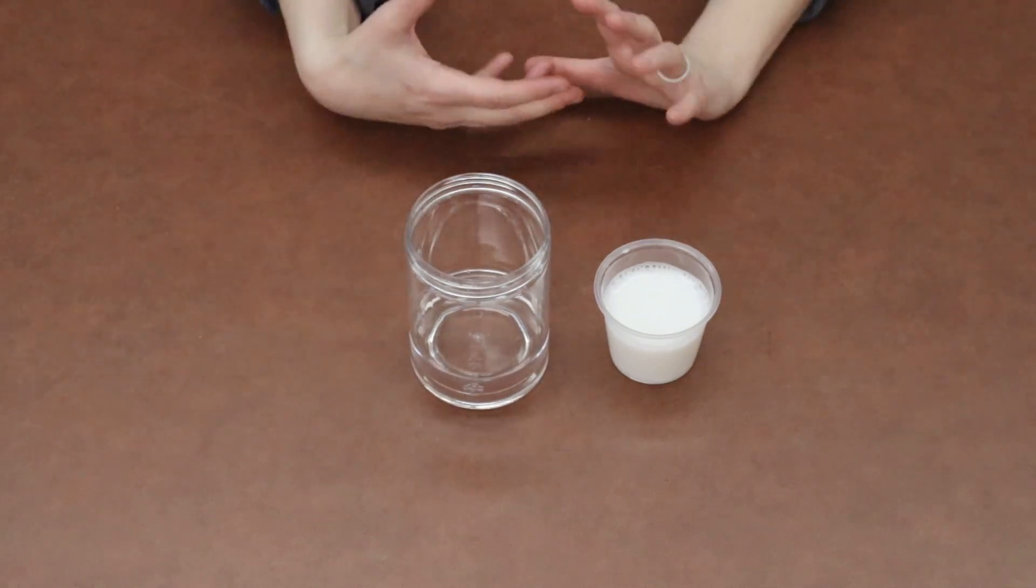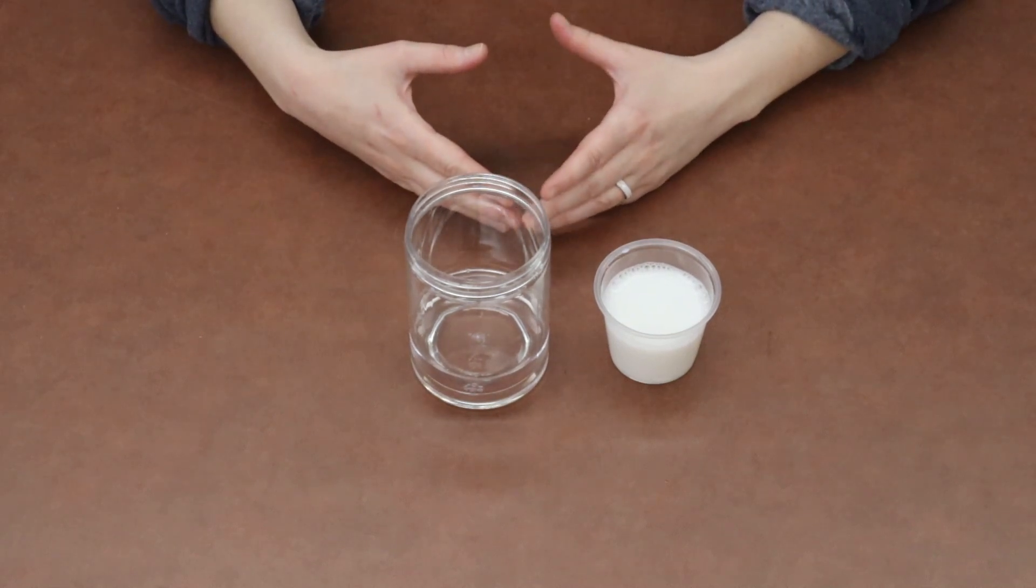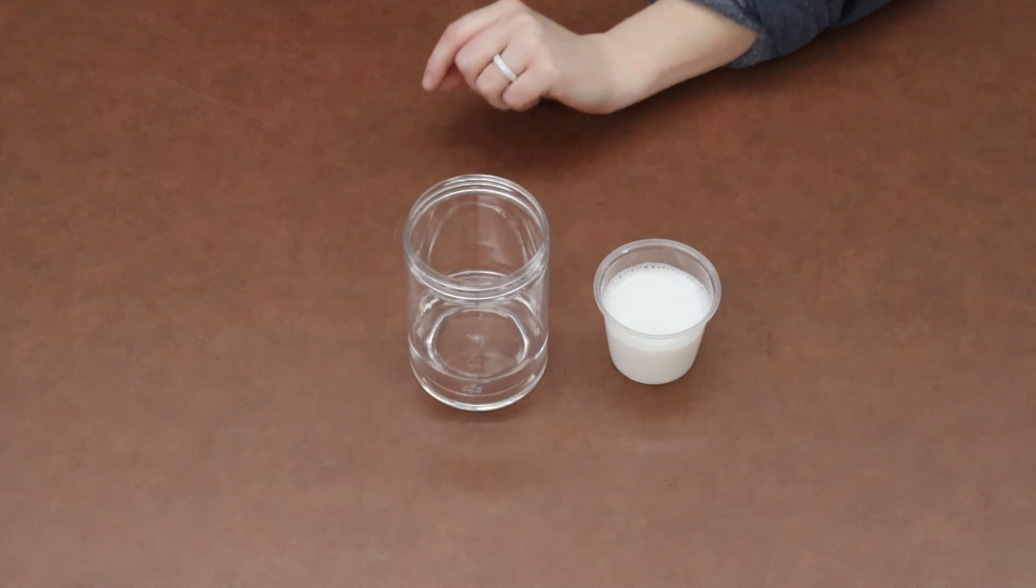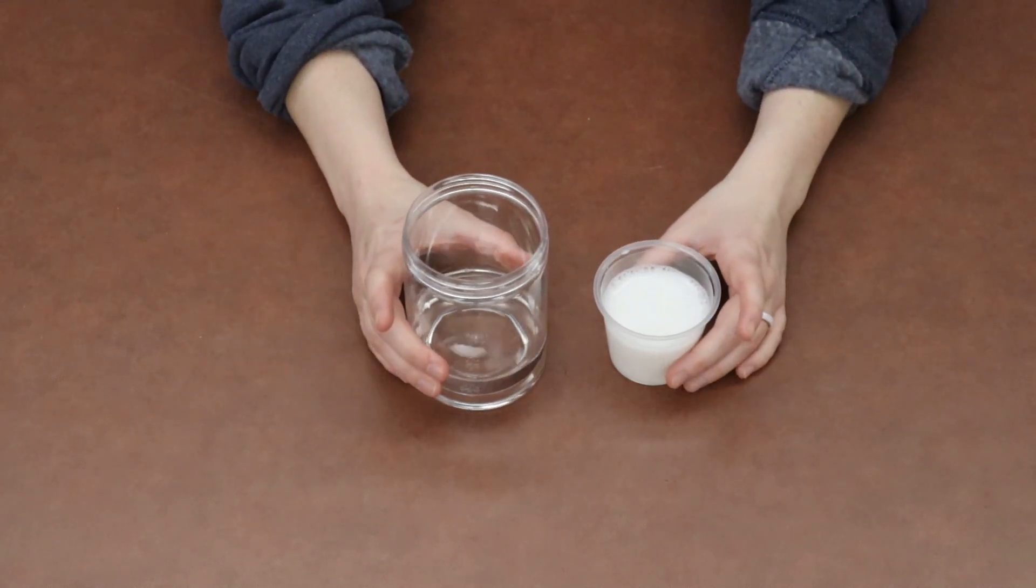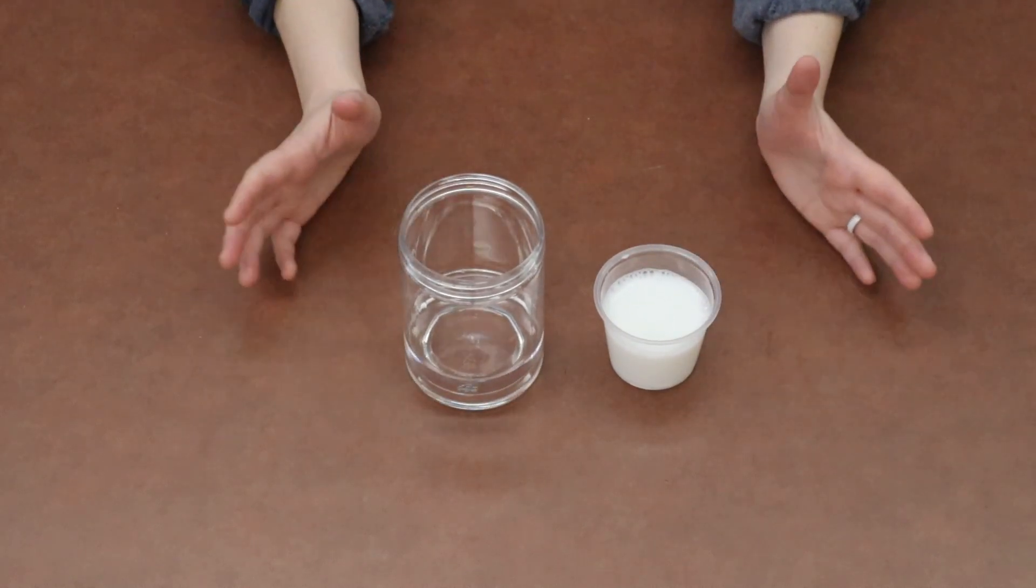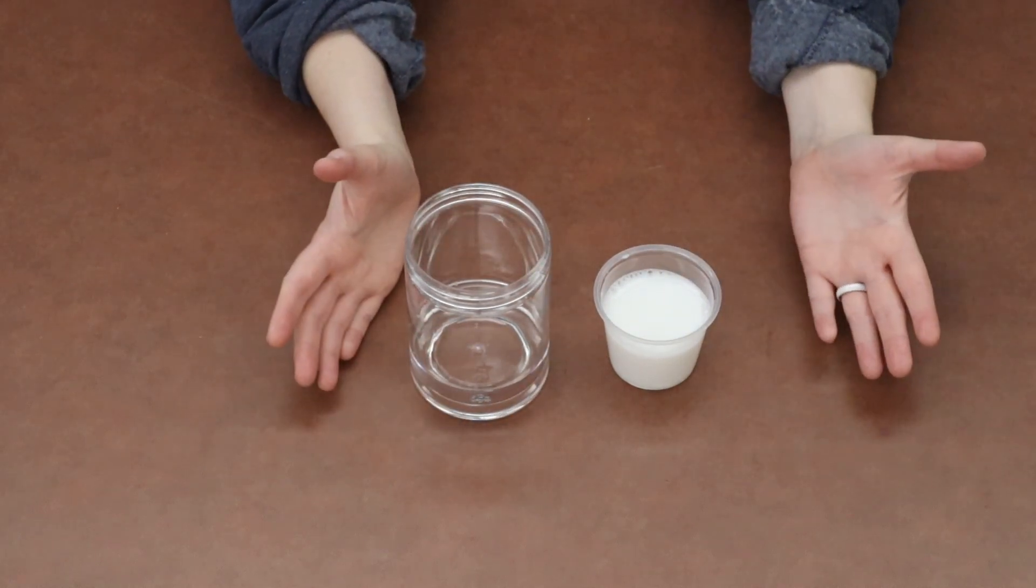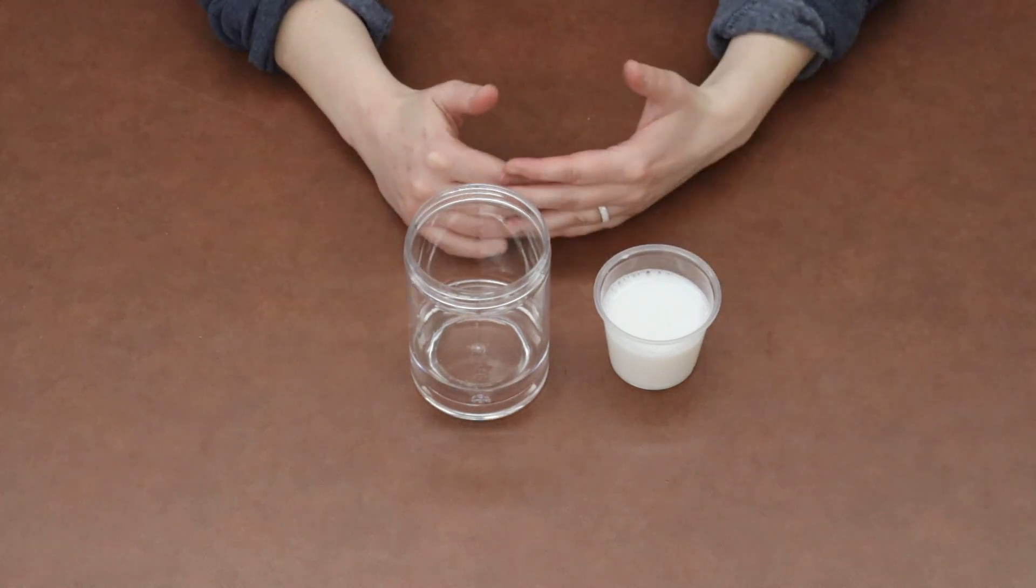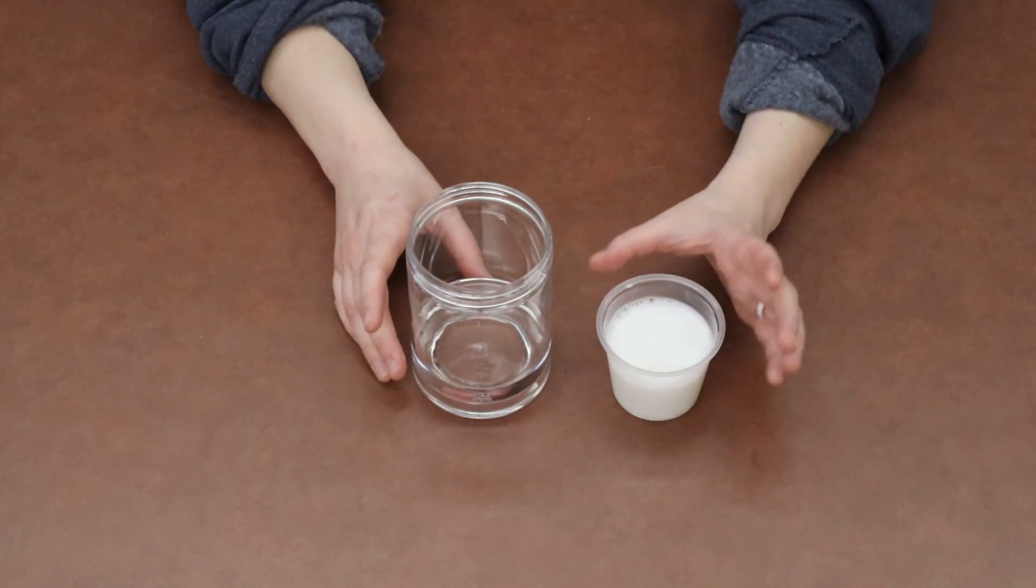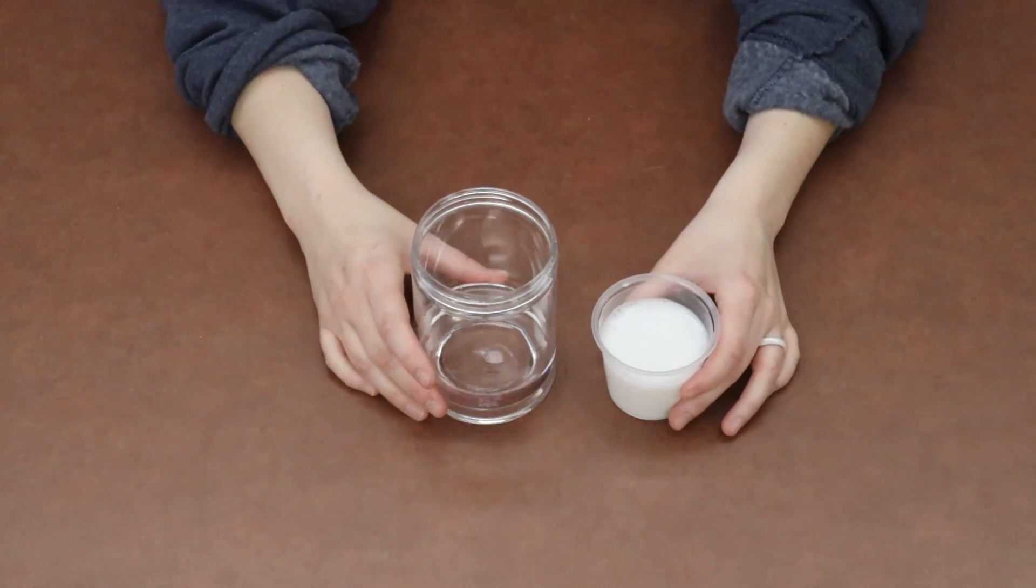Now, normally when you mix two liquids together, they're going to mix together and you're not going to notice the difference between the two. But there's something a little bit special about the difference between water and baby oil. And that is that their densities are different. And density is the word that we use to describe how much space something takes up, or its volume, compared to the amount of matter in that object. So in this case, water is more dense or heavy than baby oil, which is why it sinks right down to the bottom.